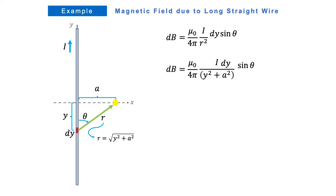Next, we would like to replace sine theta in terms of constant a and variable y. Based on this triangle again, sine theta equals opposite over hypotenuse, or a over square root of y squared plus a squared, and we can plug this into our equation.